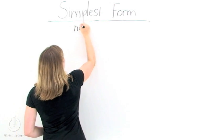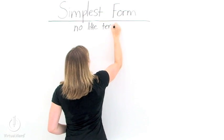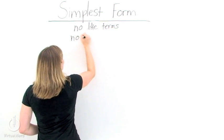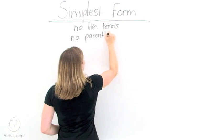This means that there are no like terms when writing an expression in simplest form. Also, there are no parentheses. We've gotten rid of all like terms and all parentheses.